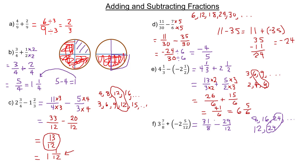Eight is the third multiple of 24, so if I multiply 31/8 by three, I get a 24 in the denominator. Eight times three is 24 down here. In the numerator, 31 times three is 93. Then 12 is the second multiple of 24, so we multiply 29/12 by two.